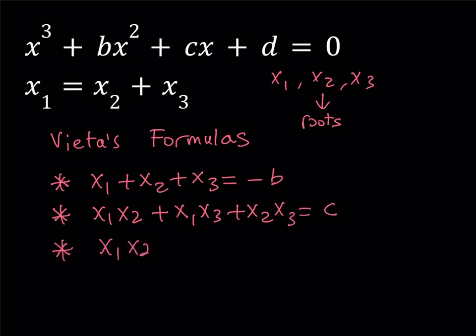And finally, the product x1x2x3 is equal to negative d over a, but in this case, it will be negative d. Okay, so these are the Vieta's formulas, and they are awesome. So, we have a relationship, this one, that's given to us, which works with this equation.